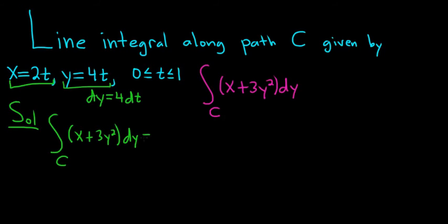Now we just carefully replace everything. So this is going to be equal to the definite integral from 0 to 1. That's where we get the 0 and the 1 from here. x is equal to 2t, so it's 2t plus 3. And then y is 4t, so it's 4t squared, and then dy is 4 dt.